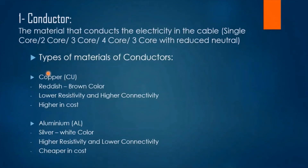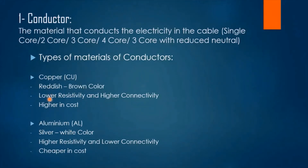The first layer is the conductor layer — the material that conducts electricity in the cable. It could be single core or multi-core. We have two types of conductor materials: copper and aluminum. Copper has a reddish-brown color while aluminum has a silver-white color. Copper has lower resistivity and higher conductivity, while aluminum has higher resistivity and lower conductivity. For example, if we have a load of 60 amps and select a copper cable, we would select a size of 16 mm².